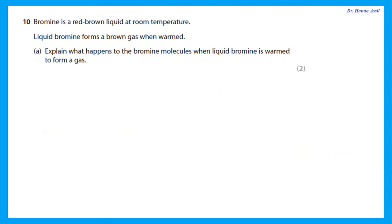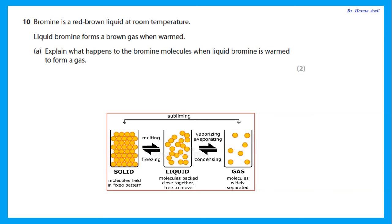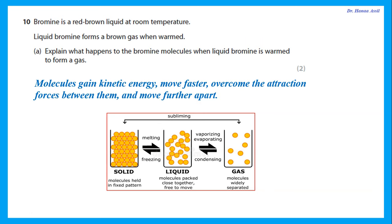Bromine is a red-brown liquid at room temperature and forms bromine gas when warmed. What happens to bromine molecules when liquid bromine is warmed to form a gas? The molecules gain kinetic energy, move faster, overcome the attraction forces between them, and move further apart. Going from solid to liquid to gas requires heat input — these processes are endothermic. Going the other way (gas → liquid → solid) gives out heat — these are exothermic processes.